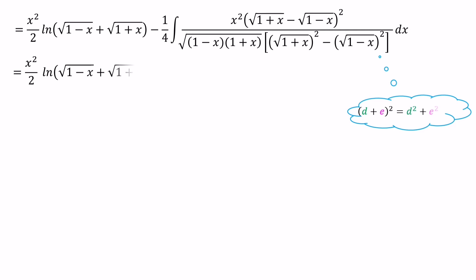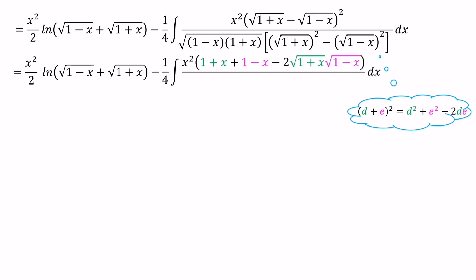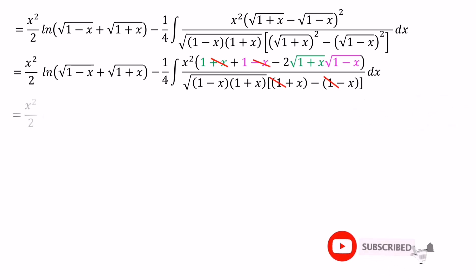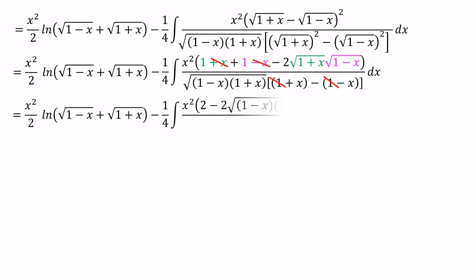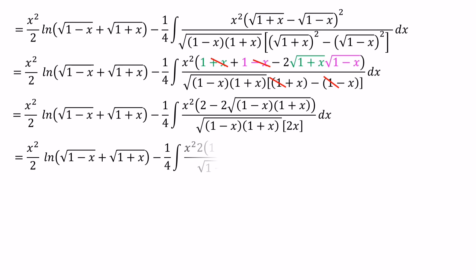Now we can expand the numerator and get the result: 1+x plus 1-x minus 2·√(1+x)·√(1-x). In the denominator we have (1+x) minus (1-x). We can cancel out in the numerator the +x and -x terms, and in the denominator +1 and -1. Then we have in the numerator 2 minus 2·√(1-x²), and in the denominator 2x. We can take 2 as a common factor in the numerator, then cancel the 2s and cancel x from denominator against x² in the numerator.